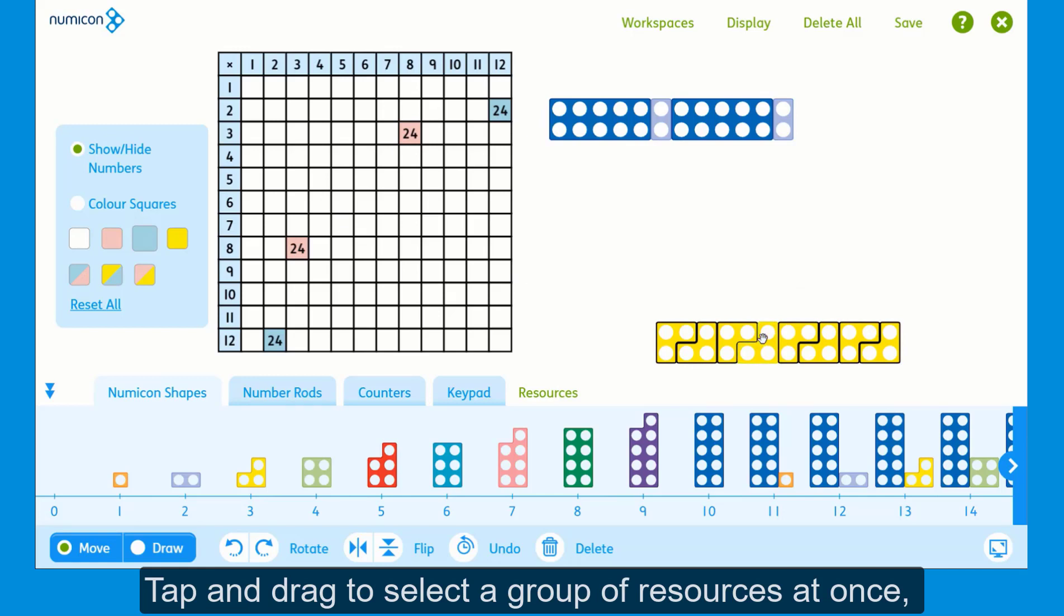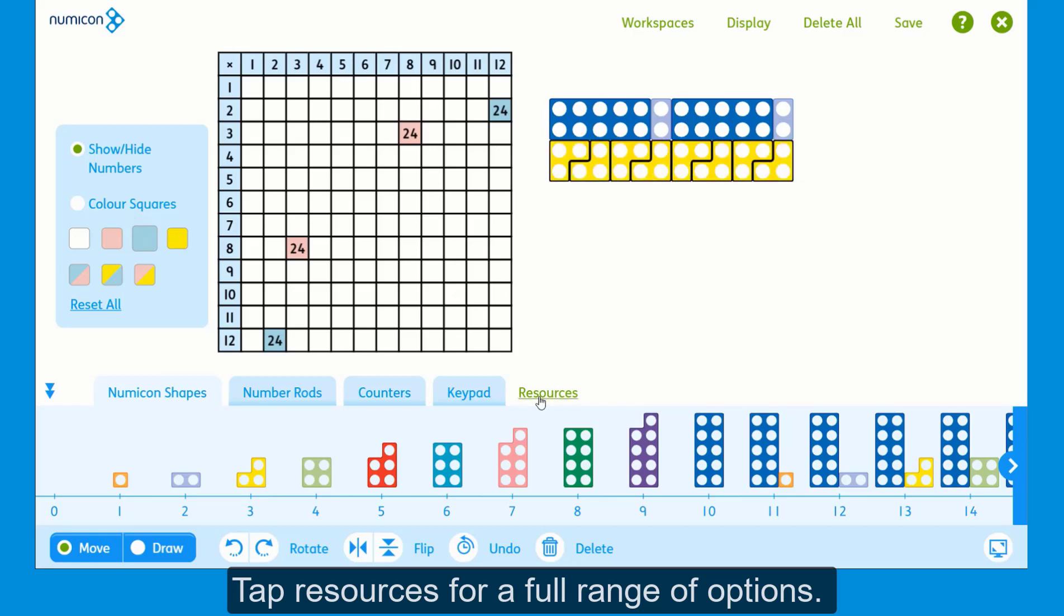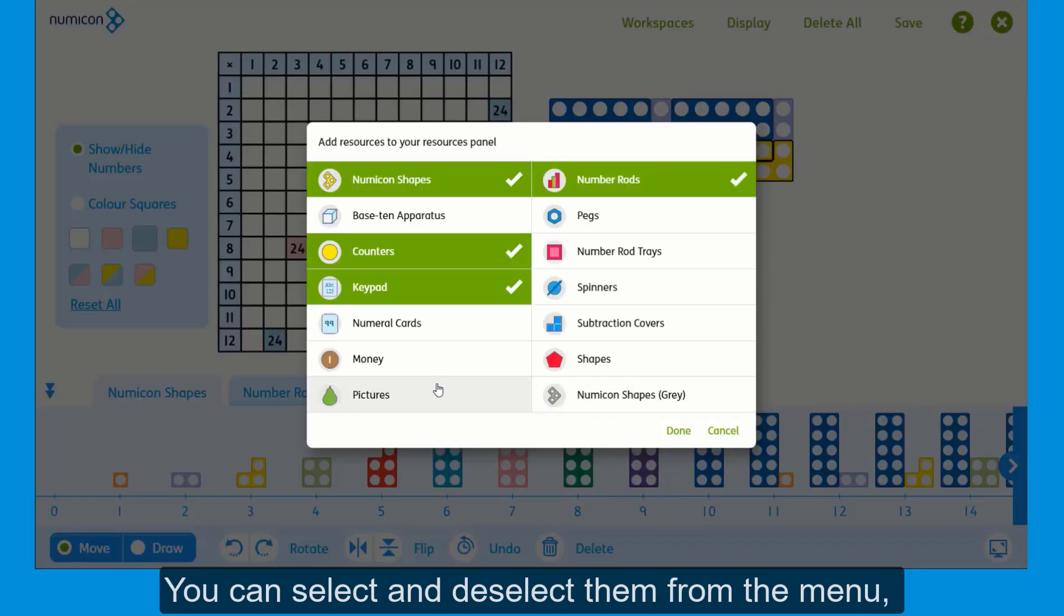Tap and drag to select a group of resources at once like these three shapes. Tap Resources for a full range of options. You can select and deselect them from the menu, then tap Done to return to the workspace.